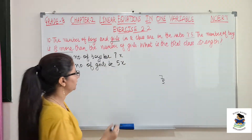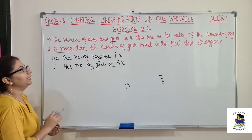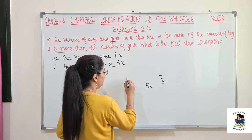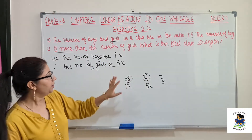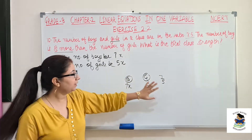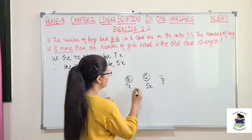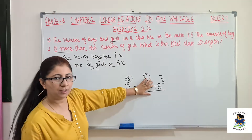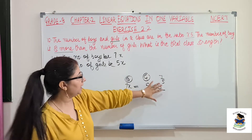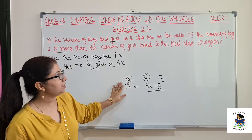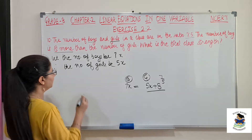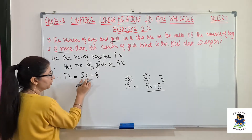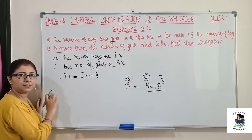So we set up our equation. The number of boys is 7x and the number of girls is 5x. The number of boys is 8 more than the number of girls, which means 7x should equal 5x plus 8. If we add 8 to the number of girls, we get the number of boys. Therefore: 7x equals 5x plus 8.